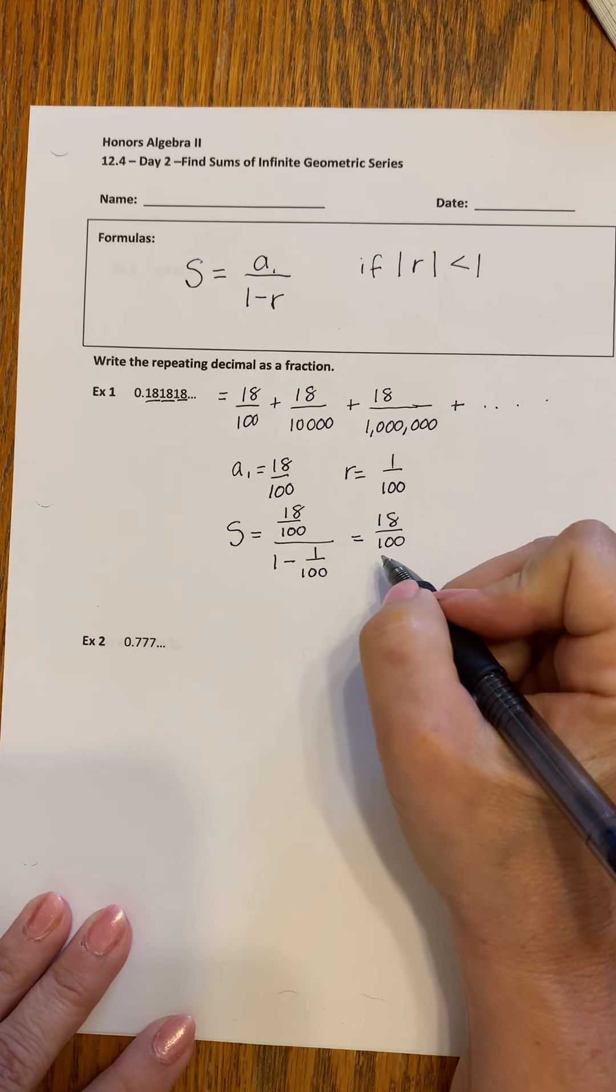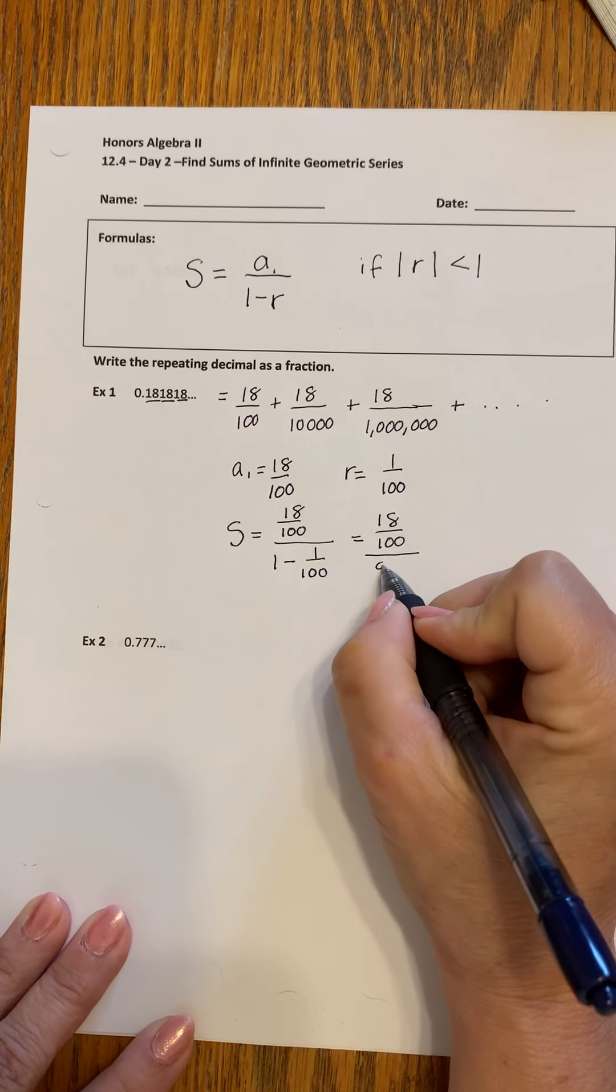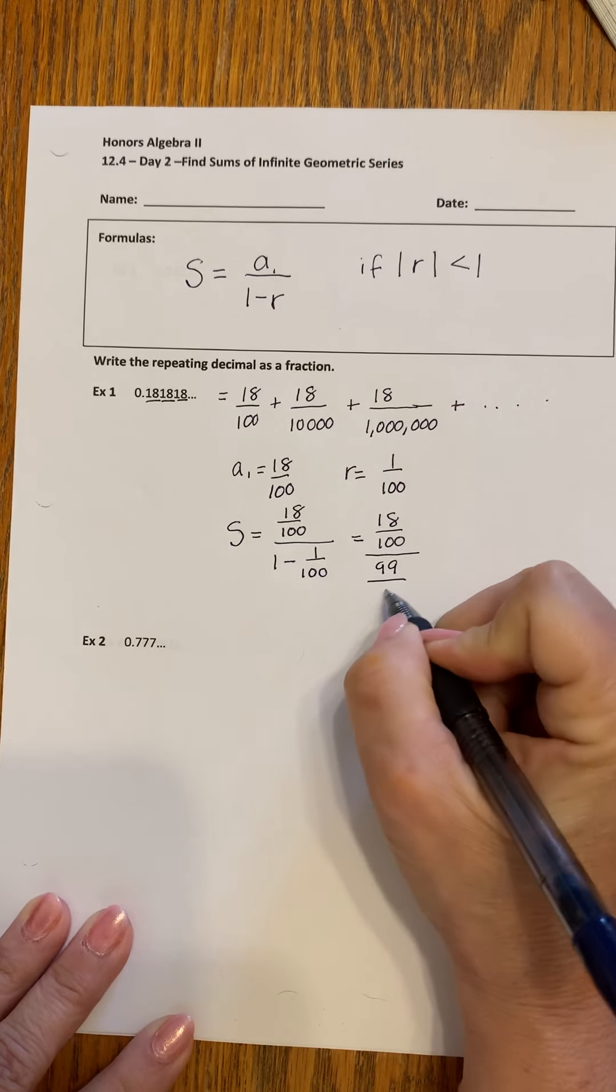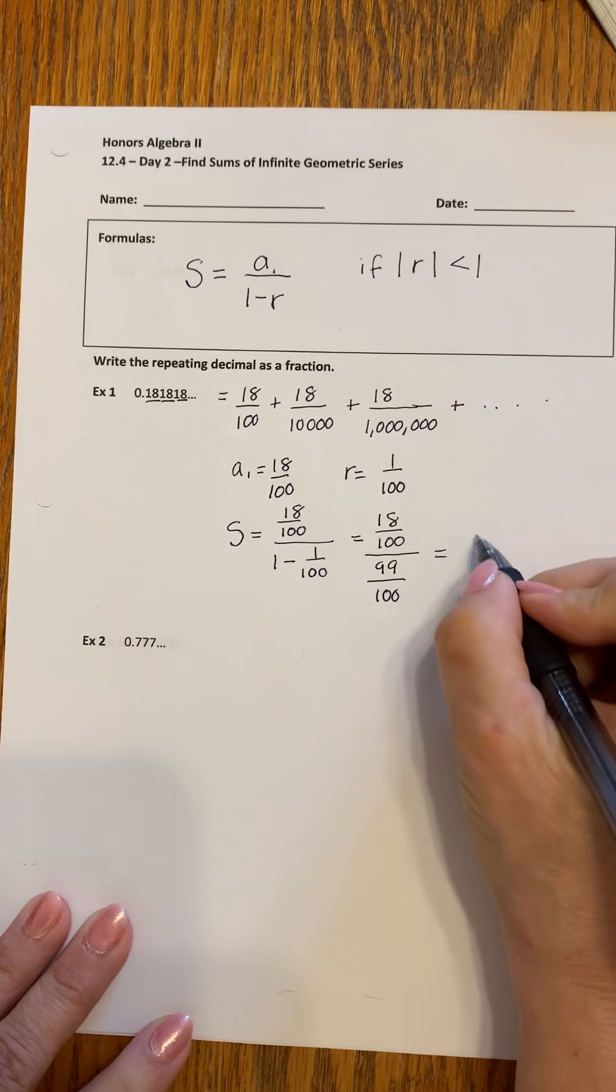18 over 100. Amazing! Life goes on, doesn't it, guys? And hundreds cancel. And we get 18 over 99.